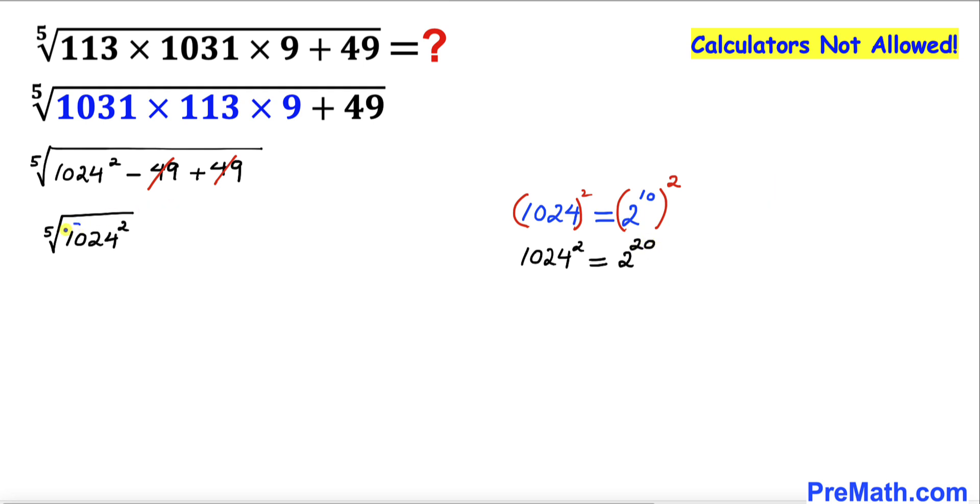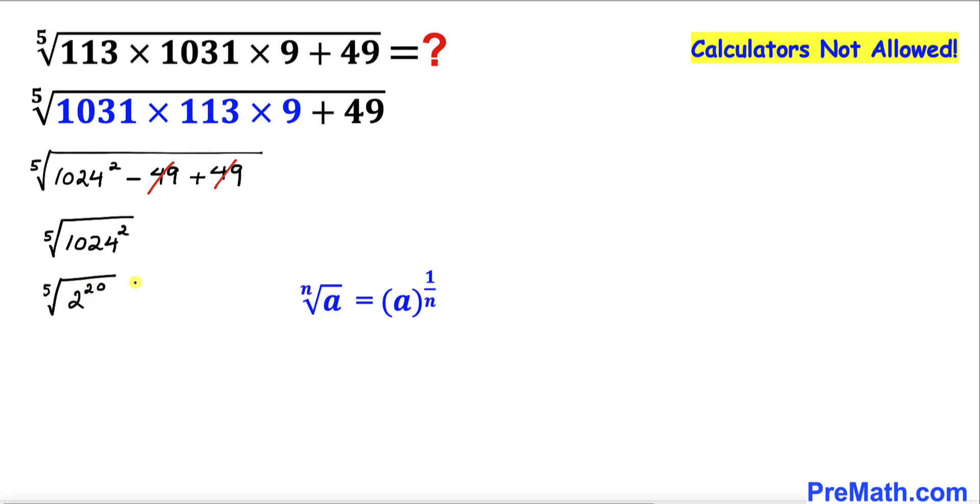I am going to replace this radicand 1024 squared by 2 to the power 20. So I can write the fifth root of 2 to the power 20. Now we can write this as 2 to the power 20 to the power 1 over 5.